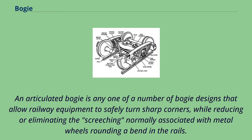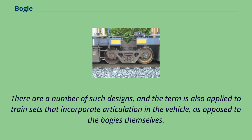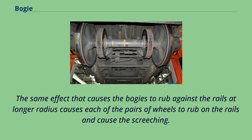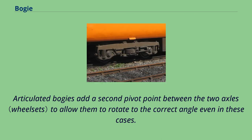An articulated bogey is any one of a number of bogey designs that allow railway equipment to safely turn sharp corners while reducing or eliminating the screeching normally associated with metal wheels rounding a bend in the rails. The term is also applied to train sets that incorporate articulation in the vehicle, as opposed to the bogeys themselves. If one considers a single bogey up close, it resembles a small rail car with axles at either end. Articulated bogeys add a second pivot point between the two axles to allow them to rotate to the correct angle even in these cases.